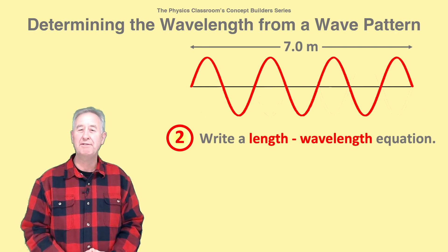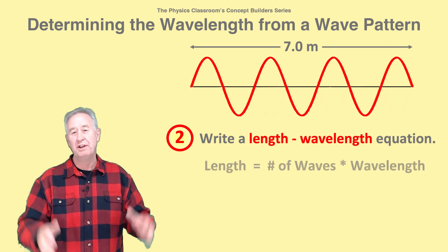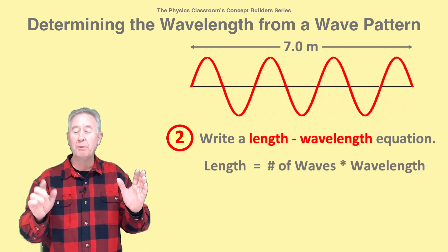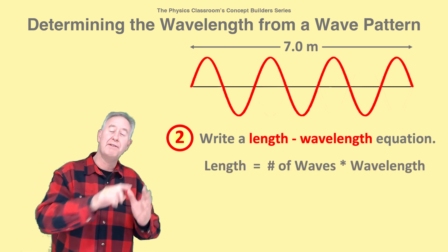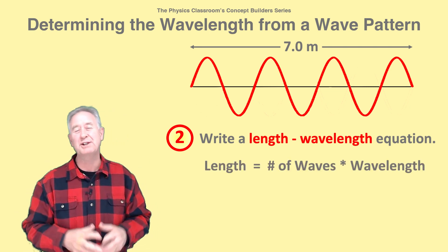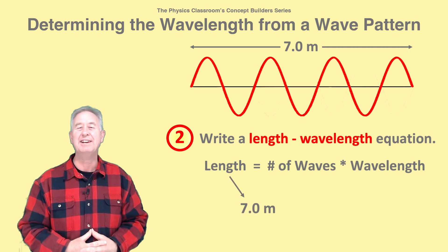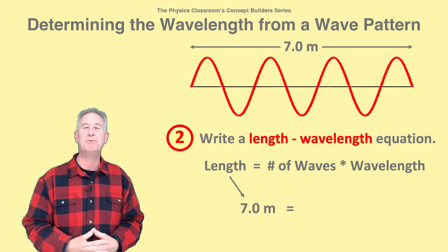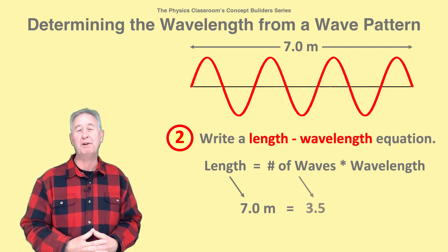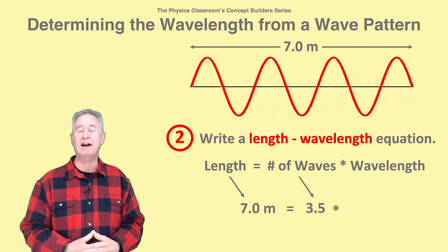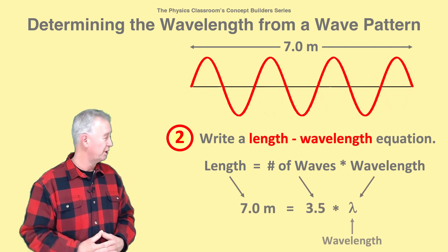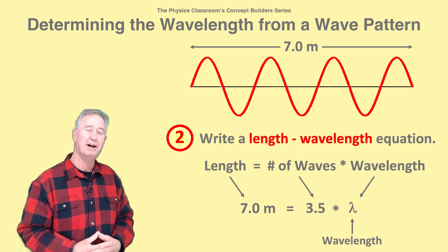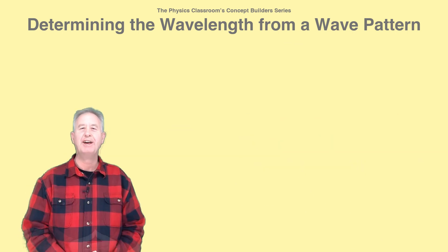The second step involves writing an equation relating the length of the rope, the number of waves, and the wavelength. Within the length of the rope there are 3.5 wavelengths, so I write: 7.0 meters = 3.5 times wavelength. The Greek letter lambda represents the wavelength.